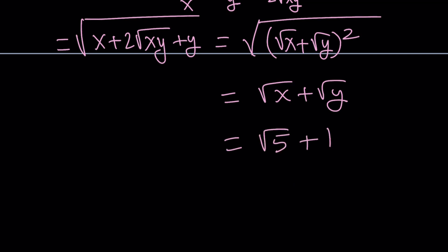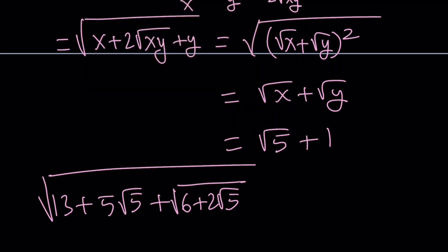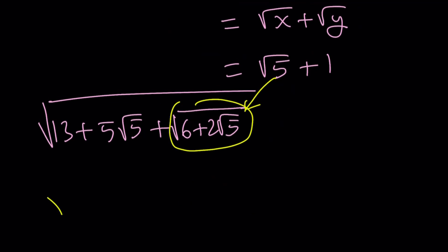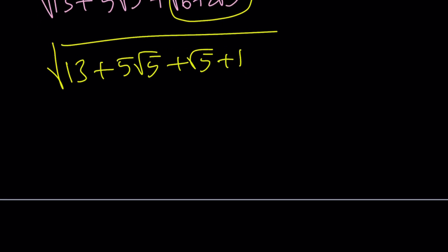So the innermost radical is going to turn into that. But our expression was the square root of 13 plus 5 root 5 plus the square root of 6 plus 2 root 5, which is the part that we just simplified. So this part turns into that, root 5 plus 1. So let's go ahead and substitute that. 13 plus 5 root 5 plus root 5 plus 1. That's going to give us another radical expression.